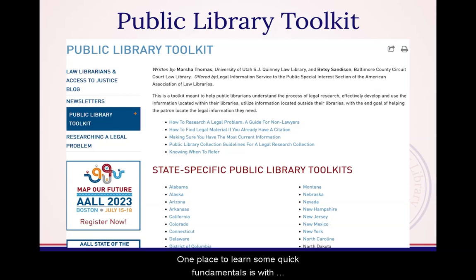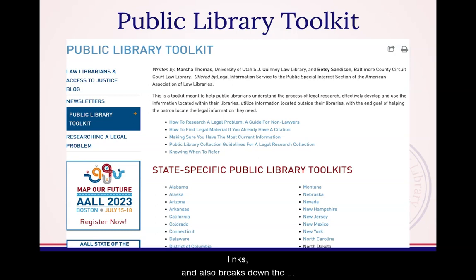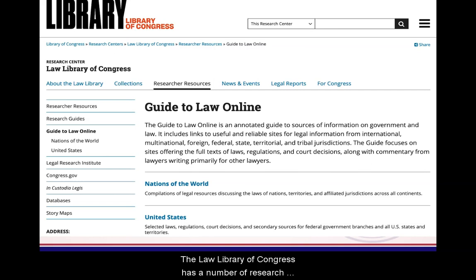One place to learn some quick fundamentals is with the American Association of Law Libraries' Public Library Toolkit. This toolkit gives state-by-state basic research links and also breaks down the legal research process. It can be helpful to start your research with pathfinders someone's already created. The Law Library of Congress has a number of research guides to get you started.